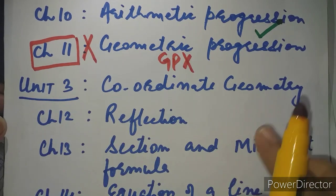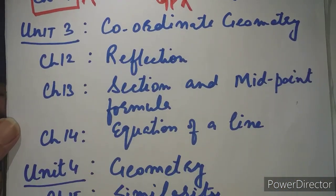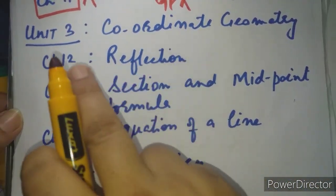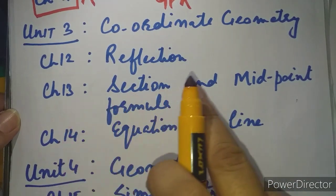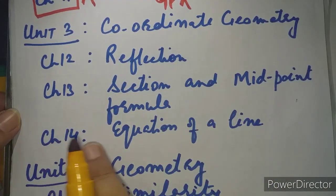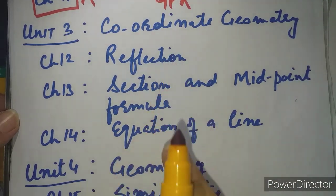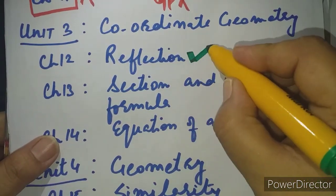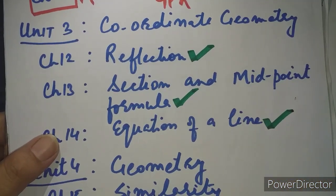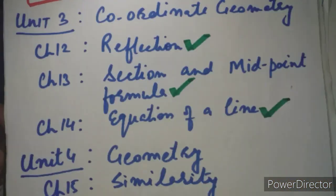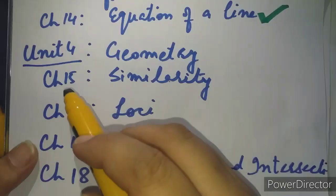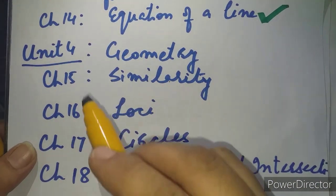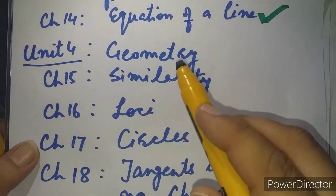Unit Number 3 is Coordinate Geometry. There is no change in any of the chapters. It includes three chapters: Chapter 12 Reflection, Chapter 13 Section and Midpoint Formula, and Chapter 14 Equation of a Line — without any plus or minus, full three chapters have been included, so big green signals to all three chapters.